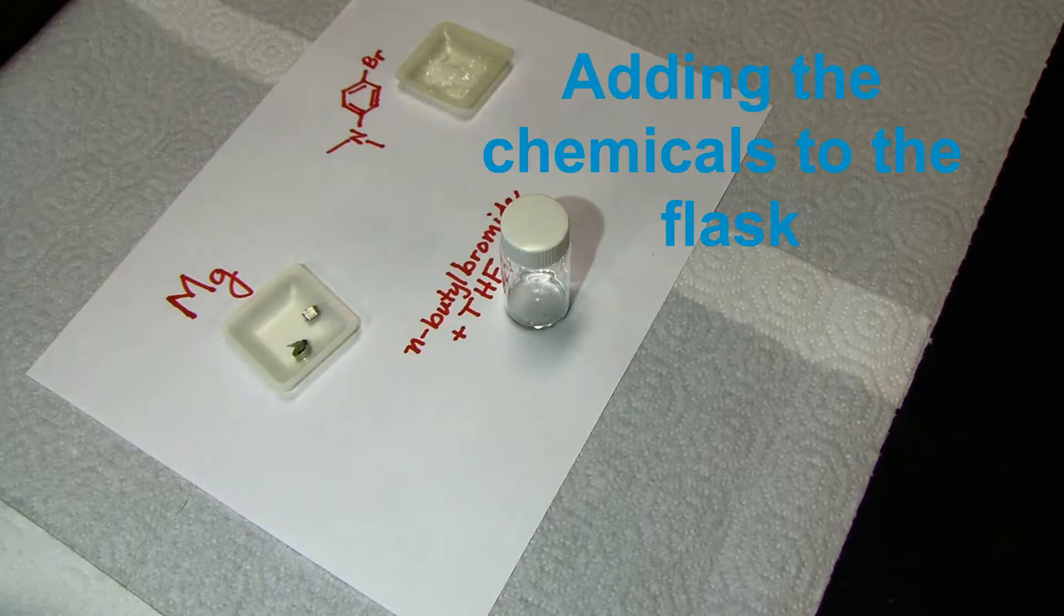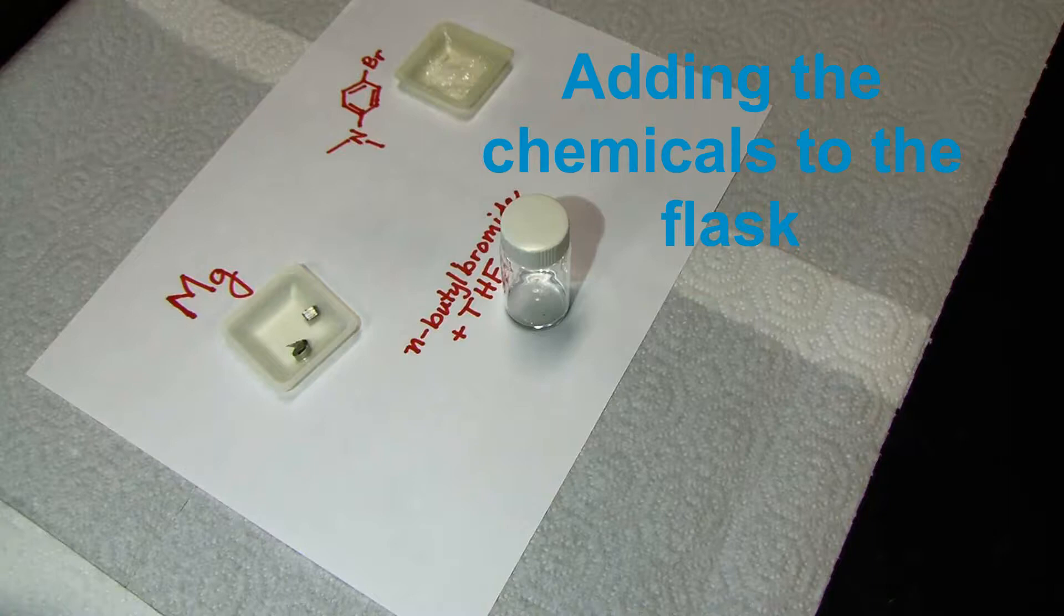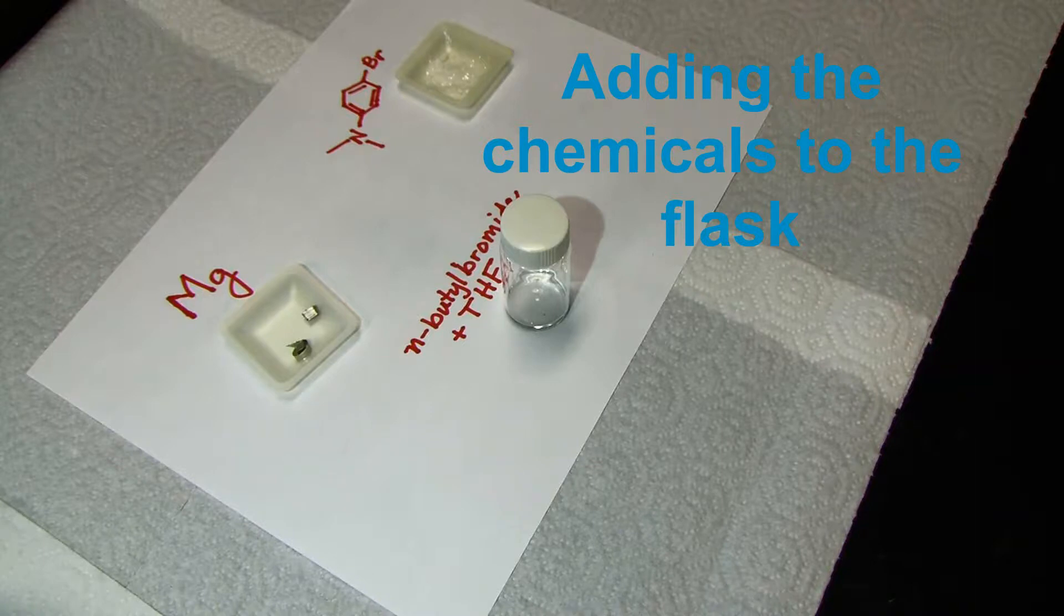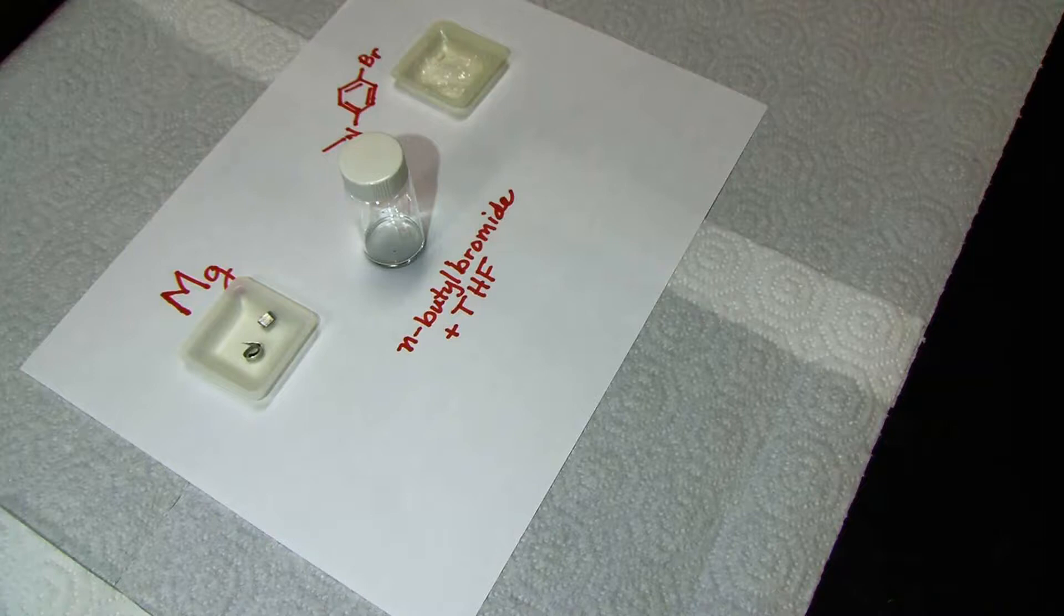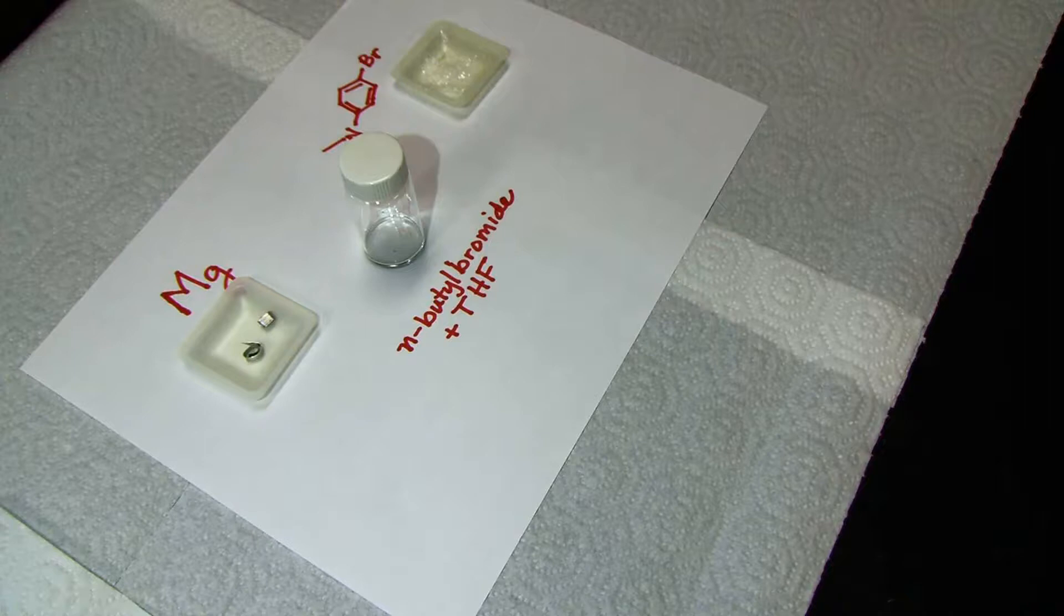We will be setting up the reaction in the fume hood and we'll need to move quickly after opening the apparatus assembly to keep it dry. So I thought I would first go through the steps more slowly. Here are my weighed solids with the magnesium curled up and the glass vial with the n-butyl bromide and THF from the syringes.